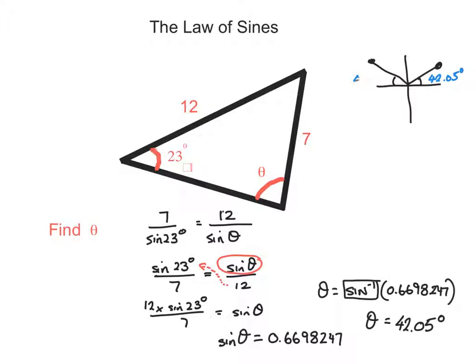So therefore there is another value of theta. We know in quadrant 1, theta does equal 42.05, and in quadrant 2, it's 180 minus 42.05, which is equal to 137.95.